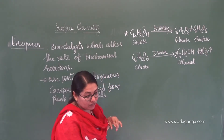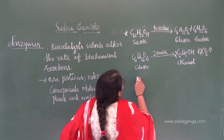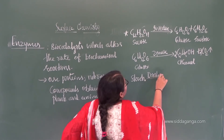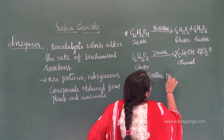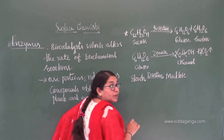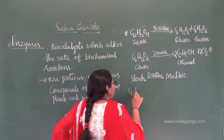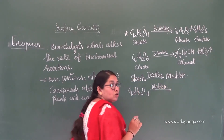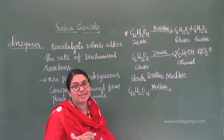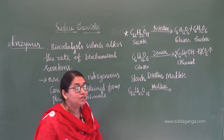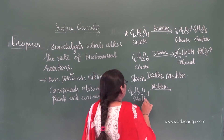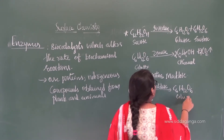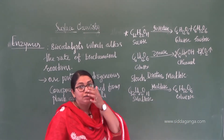Another example: starch is acted upon by the enzyme diastase, which converts starch into maltose. Maltose (C₁₂H₂₂O₁₁) is a disaccharide acted upon by the enzyme maltase — note that most enzyme names end in '-ase': zymase, invertase, diastase, maltase. Maltase converts maltose into glucose (C₆H₁₂O₆), which is easily absorbed in the digestive system.